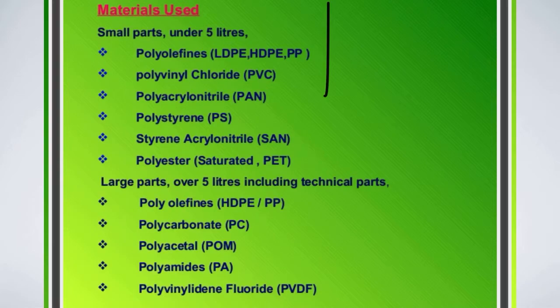Some of the materials used include polyethylene, polypropylene, and polished or similar polymer materials. These are the materials which are used to make different kinds of plastic products.